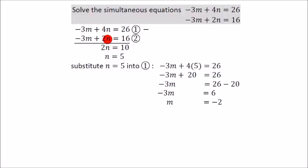4n take away 2n is 2n, 26 take away 16 is 10. So we're left with 2n equals 10. So n equals 5.